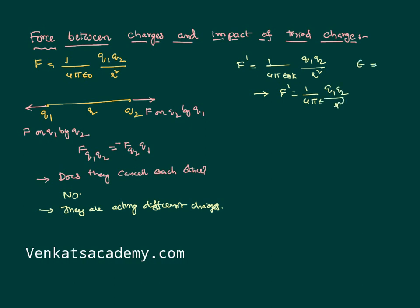Where epsilon is the permittivity of that medium. The relative permittivity is epsilon by epsilon 0 which is also called as dielectric constant. That implies epsilon equal to epsilon 0 into k.